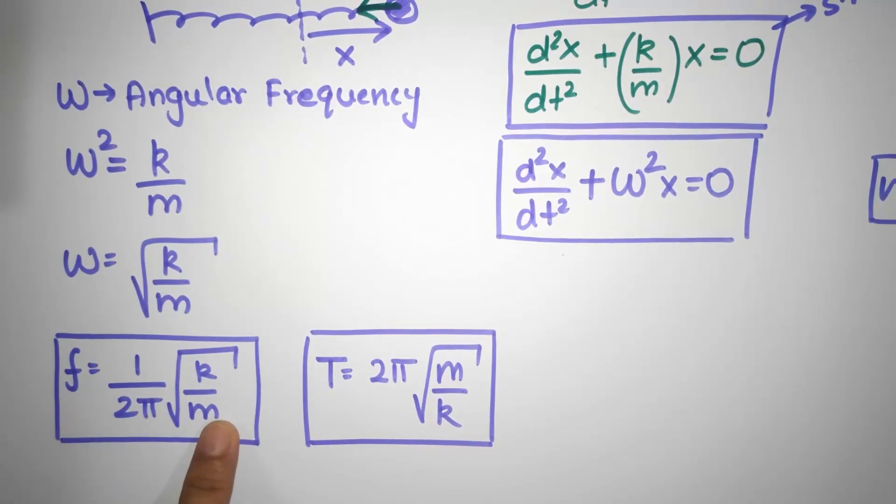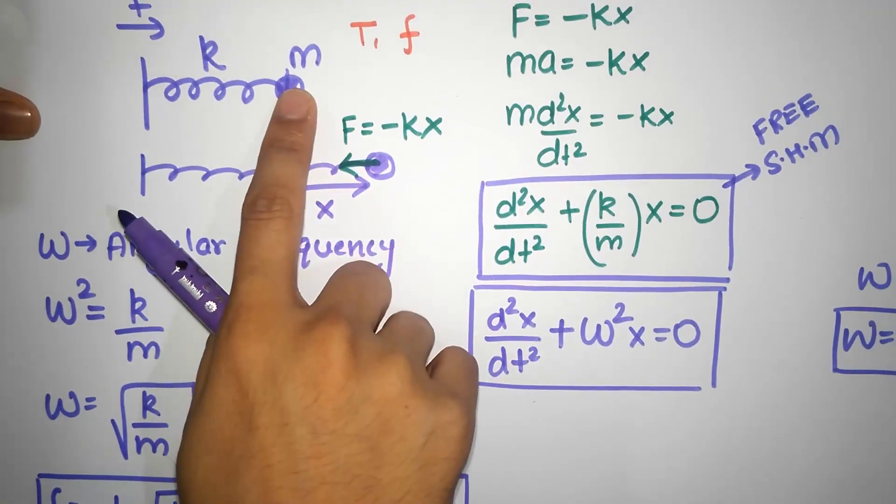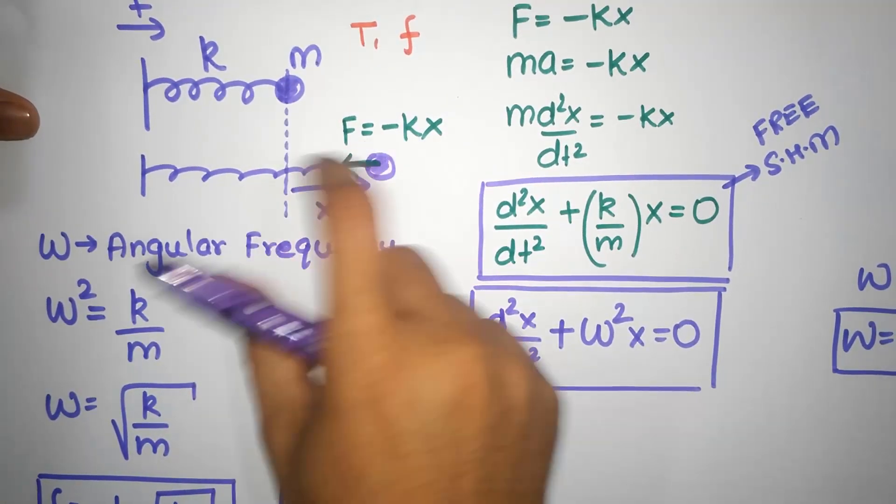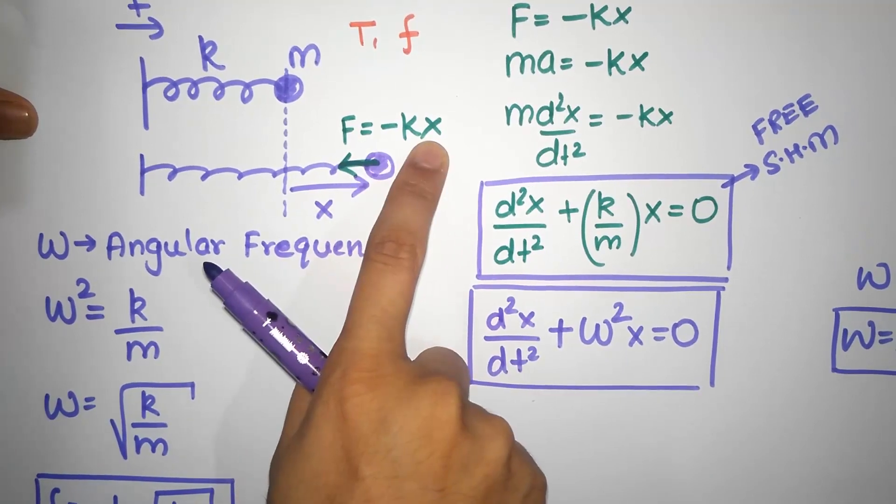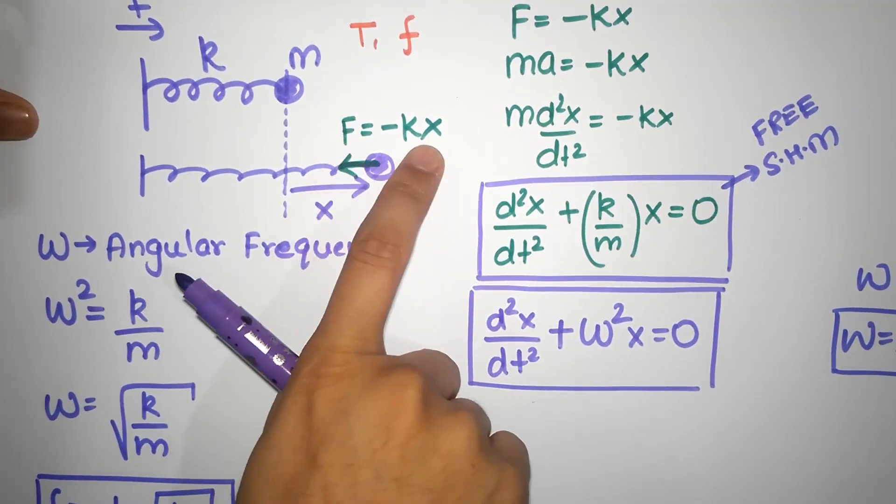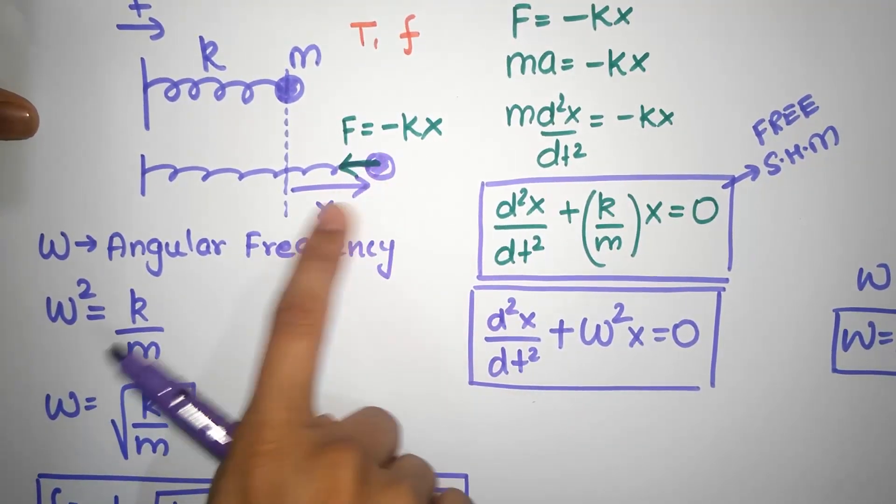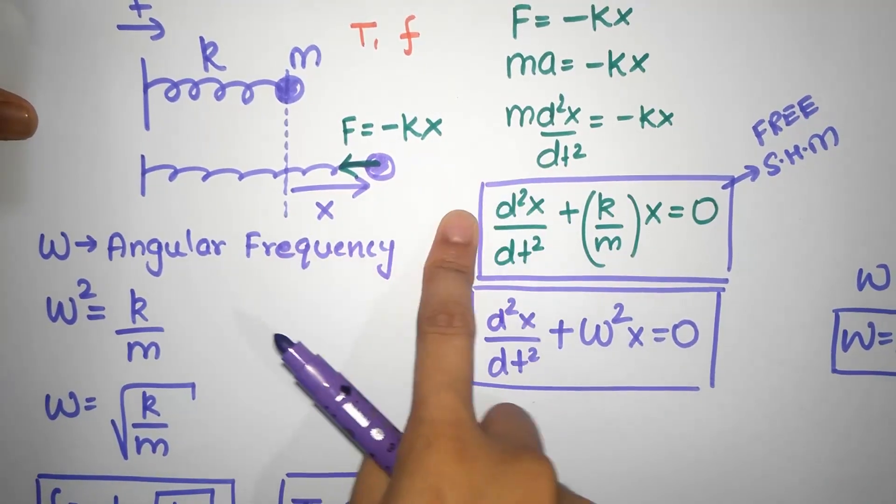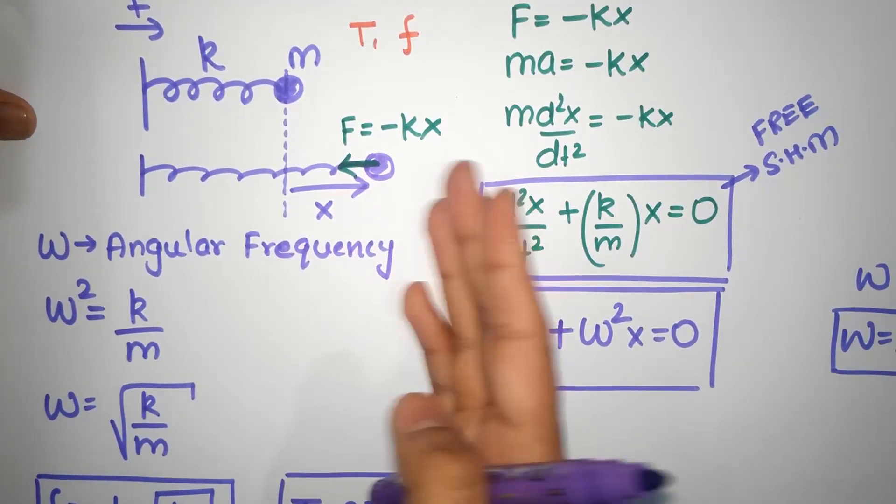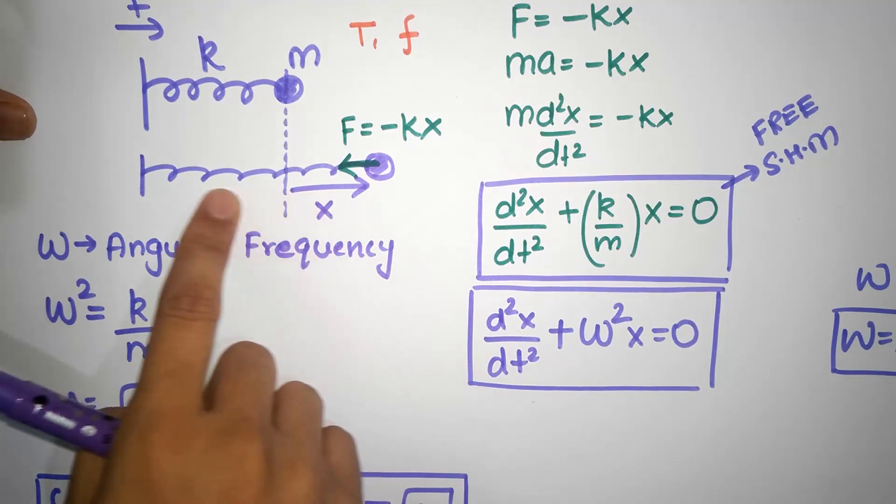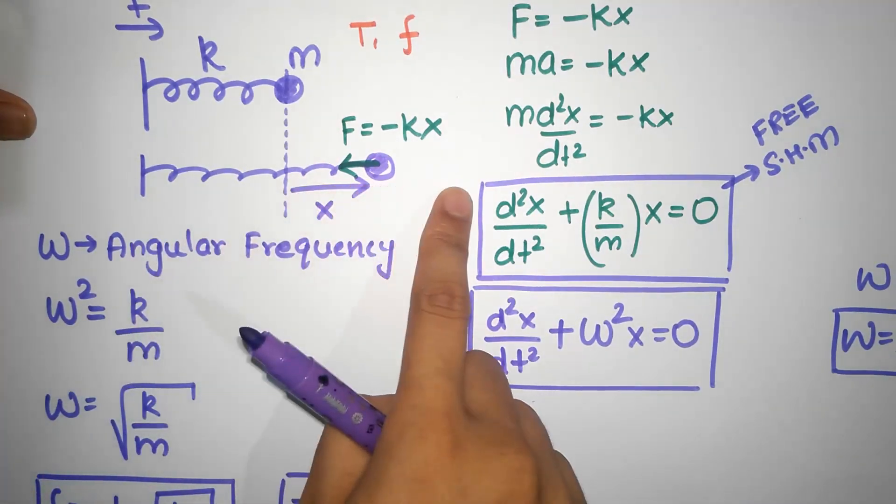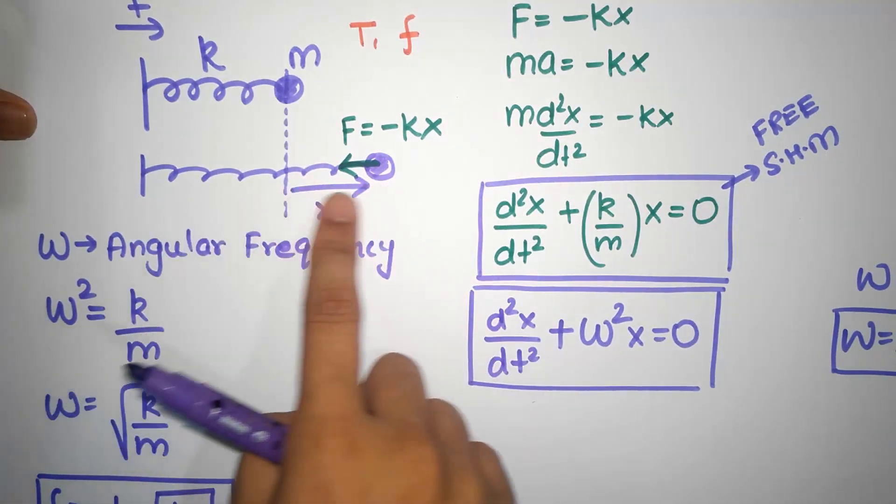Also, notice the frequency decreases with mass. Well, if you attach like an elephant over here and you stretch it, the force is going to remain the same, right? Because the force does not depend on the mass. The force only depends on this extension. So, if you put an elephant over here, it's going to get a very small acceleration. And because of the small acceleration, it'll end up having a very high value for the time period.